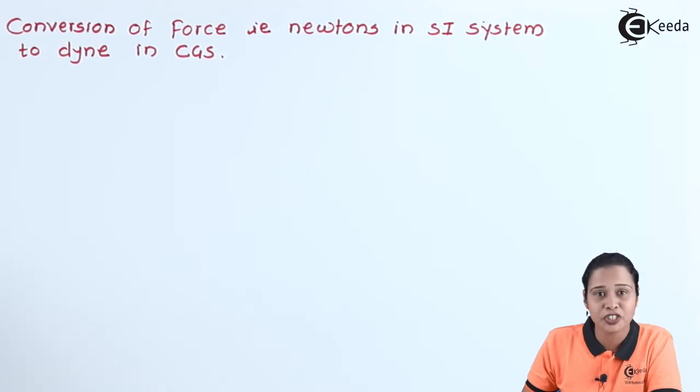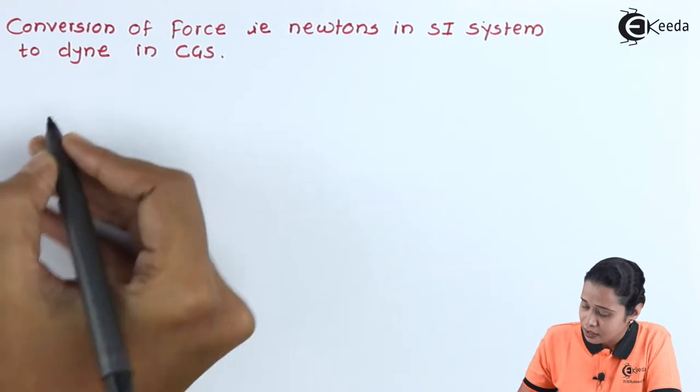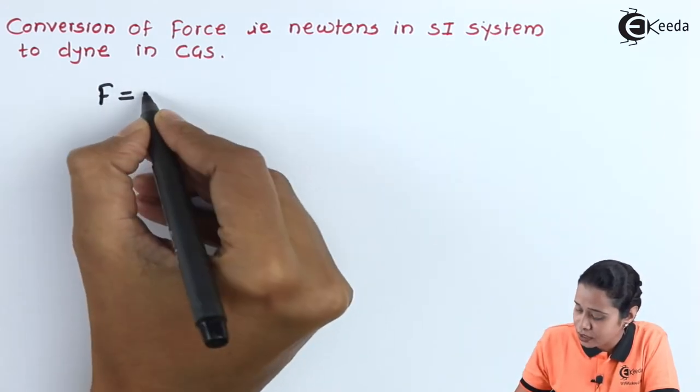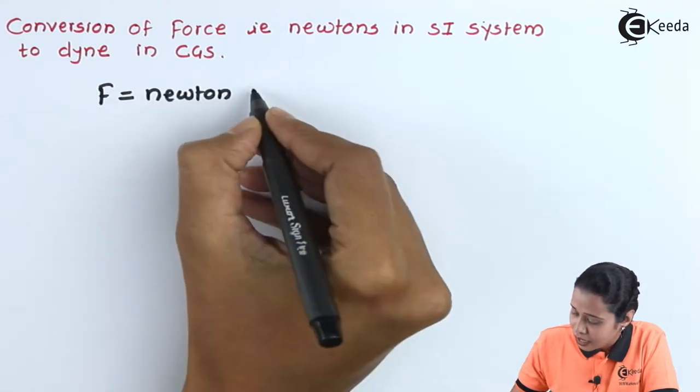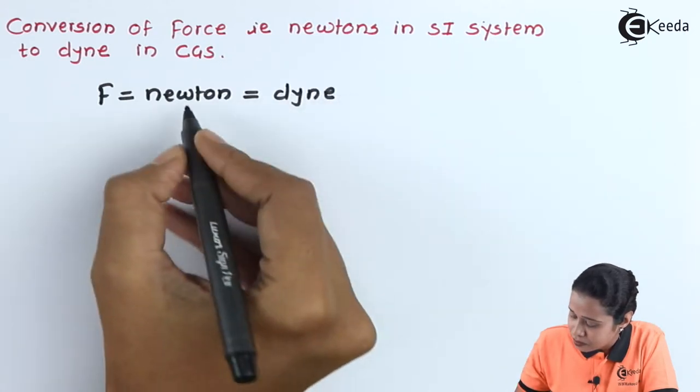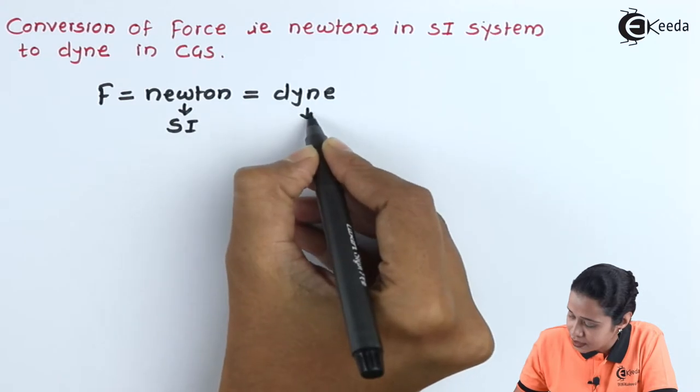Let us start with the conversion of Newtons, that is from SI unit to dynes. We know force, the unit of force in SI unit is Newton, and in CGS it is dynes. This unit is in SI and this one is in CGS.